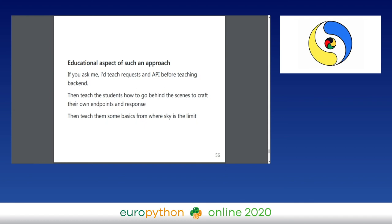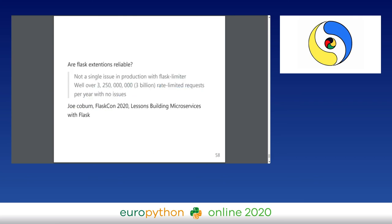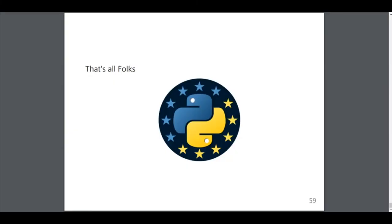Those who want to dive in all at once can always go for it. Here is the link to the project. Some closing words about the Flask ecosystem's reliability: Mr. Joker Burn spoke at FlaskCon 2020 about his lessons building microservices with Flask. He said he handles 65,000 requests per minute — three billion rate-limited requests per year — and has had absolutely no issues. Thank you.